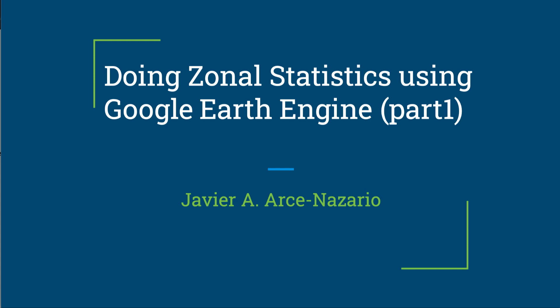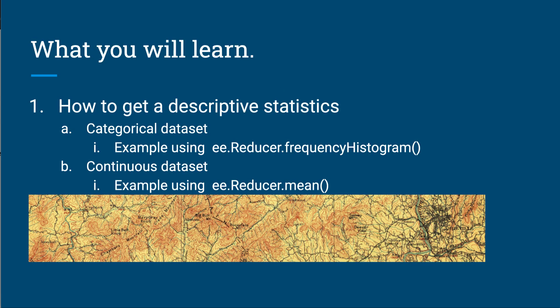Hello again. In this video I'm going to show you how to do zonal statistics using Google Earth Engine. This is a very basic zonal statistics analysis. What we're trying to do is make some descriptive statistic measurements within a region of a raster dataset. Since we're doing mathematical analysis, we need to consider the data type. I'll give examples using both categorical and continuous datasets. For categorical data, we'll apply the frequency histogram reducer, and for continuous data I'll use Landsat.